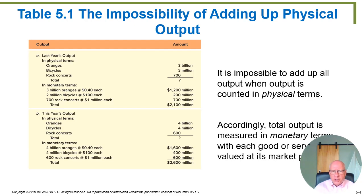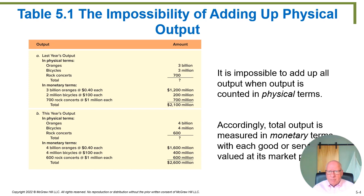Let's look at one more issue of why we use market prices as our mechanism for adding up total production. Why don't we simply add up the physical items produced rather than the dollar amounts? Let's try it. Here's an example where a country produces 3 billion oranges, 3 million bicycles, and 700 rock concerts. How do you add those up without using dollars? You can't add apples and oranges — that's a famous phrase — because addition doesn't work on things of different essences. There's no way to add a rock concert with a bicycle. But you can add them up in dollars because dollars represent what people desire.